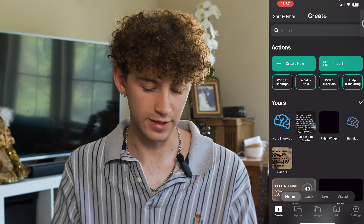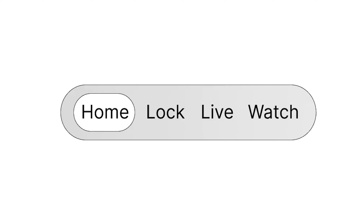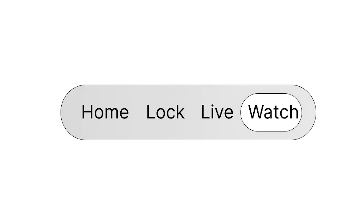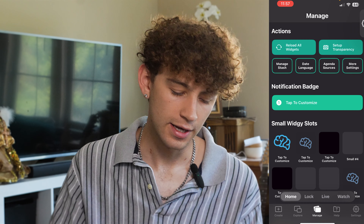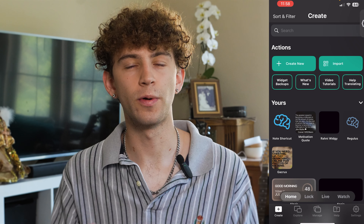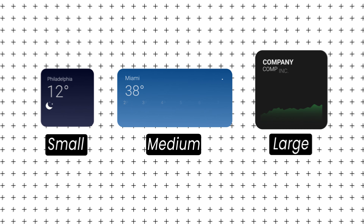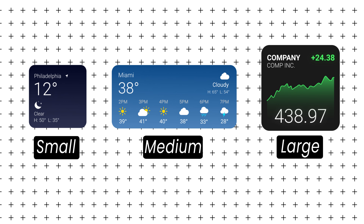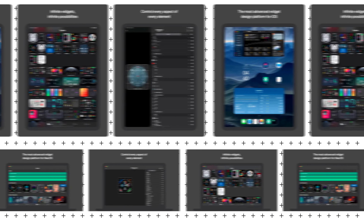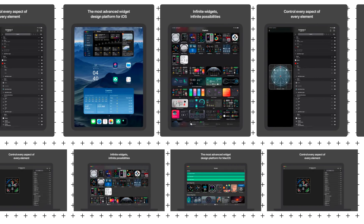Here I am in the actual Widgie home interface. You'll notice on the bottom there's the home, lock, live, and watch tabs. I won't be covering the watch, but I will be covering the other three. On your home screen you can make a large, small, extra large, or medium-sized widget. It also works for the iPad and macOS as well, and what's cool is they all transfer through your iCloud.